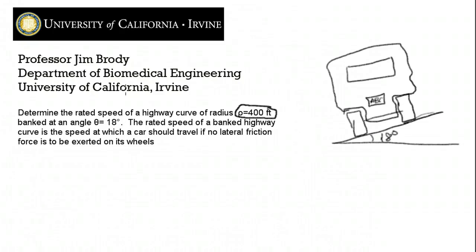Here's the problem. Determine the rated speed of a highway curve of radius ρ equals 400 feet, banked at an angle θ equals 18 degrees.